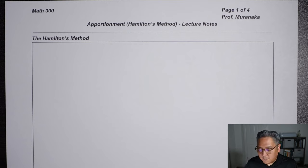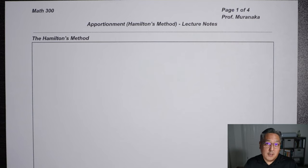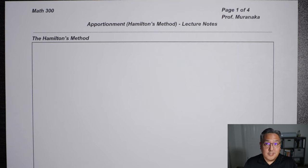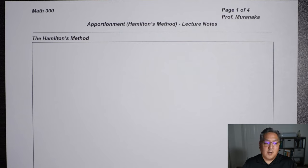For the Hamilton Method, remember we're trying to take the population of the states and the number of representatives that we have and give out those representatives to the states based on their population. So we should see in this calculation the populations, the number of representatives, and things that correspond to each state.